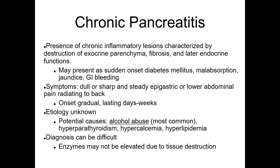Chronic pancreatitis is the presence of chronic inflammatory lesions characterized by destruction of exocrine parenchyma, fibrosis, and later endocrine function loss. It may present as sudden-onset diabetes mellitus, malabsorption, jaundice, or GI bleeding. Symptoms include dull or sharp, steady epigastric or lower abdominal pain radiating to the back; onset is gradual but lasts days to weeks. The most common cause is alcohol abuse. Diagnosis can be difficult as enzymes may not be elevated due to tissue destruction.